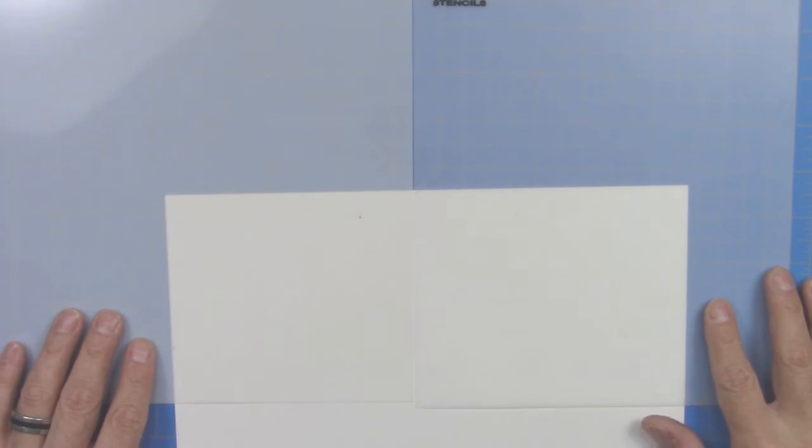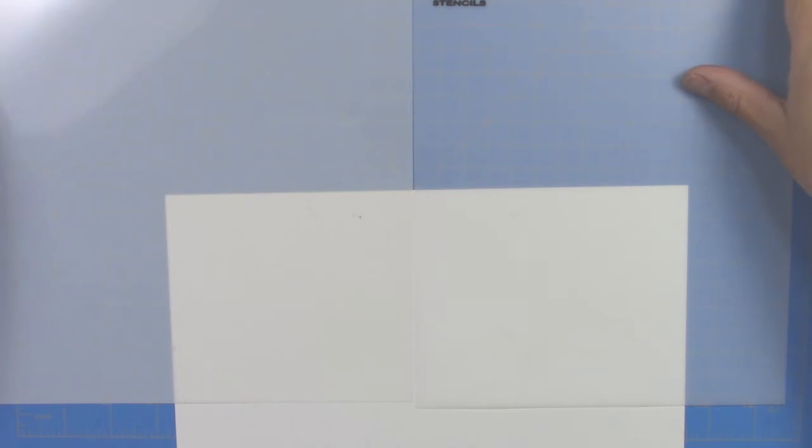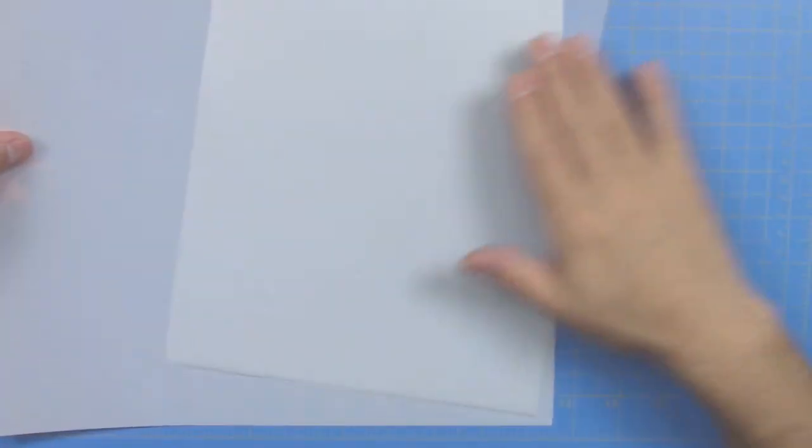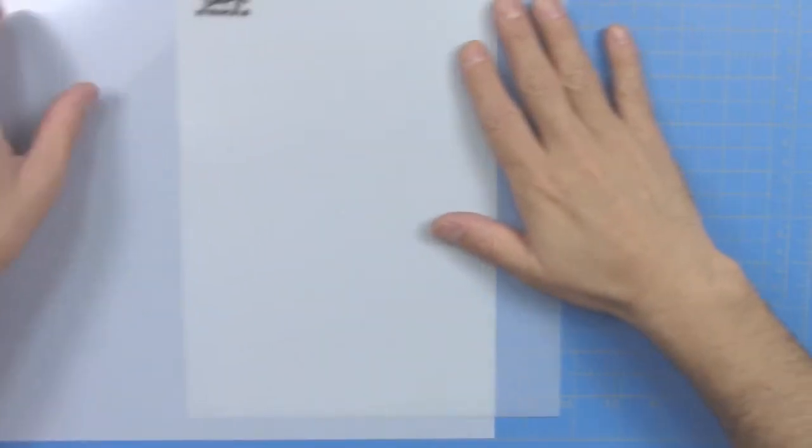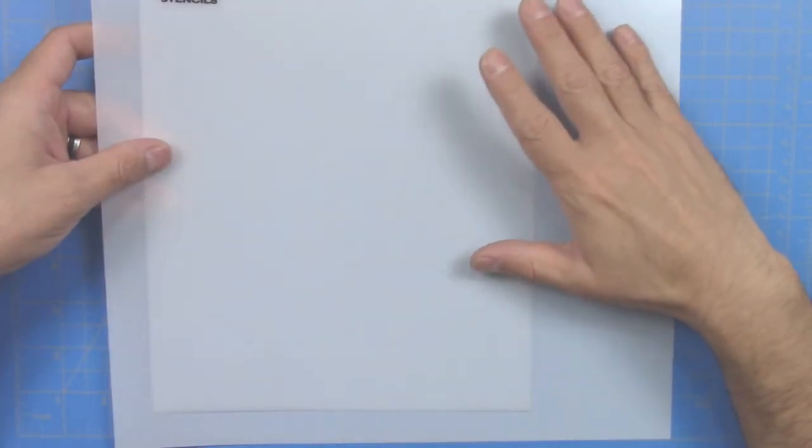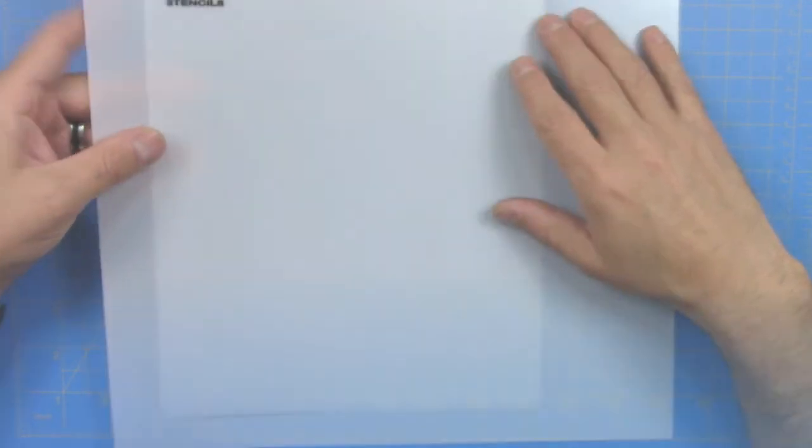They are both very resistant materials and they cut very well on the Cricut Explorer. I used a custom setting of a pressure of 320 with a two pass cut and a fine tip blade on a standard grip mat. That cuts very well on both these materials.